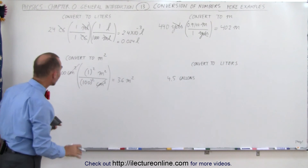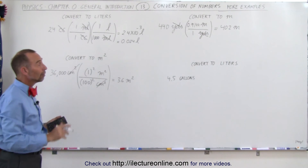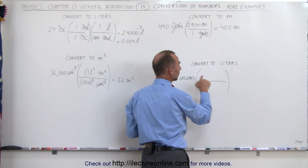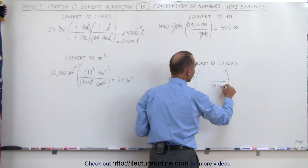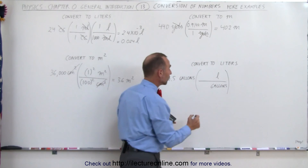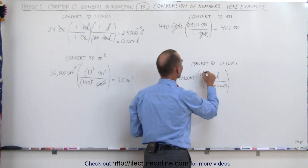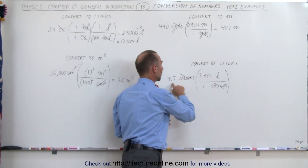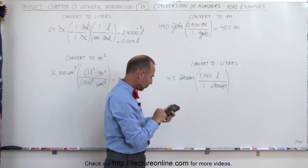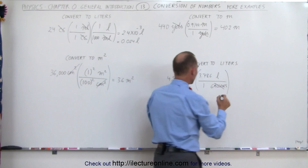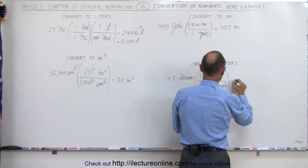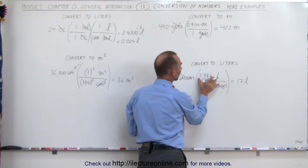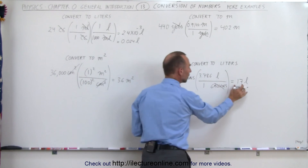Now from gallons to liters. Since we want to get rid of gallons, gallons goes in the denominator and liters goes at the top. The conversion is that one gallon is 3.786 liters. Gallons cancels out, leaving liters. So 4.5 times 3.786 equals 17.037 liters — or simply 17 liters, because we have two significant figures in our starting value, so we limit our answer to two significant figures.